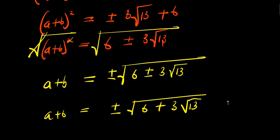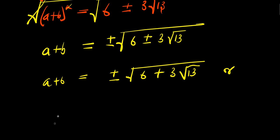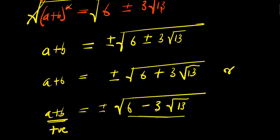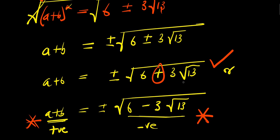So from here, taking the square root, a plus b equals plus or minus square root of 6 plus 3 root 13, or a plus b equals plus or minus square root of 6 minus 3 root 13. Now look at this: the second option gives us a complex value because 6 minus 3 root 13 is negative. So we are not going to accept that solution. The only solution we accept is a plus b equals plus or minus square root of 6 plus 3 root 13.